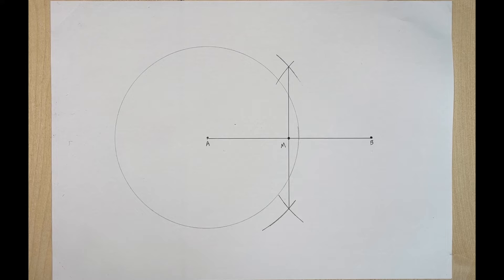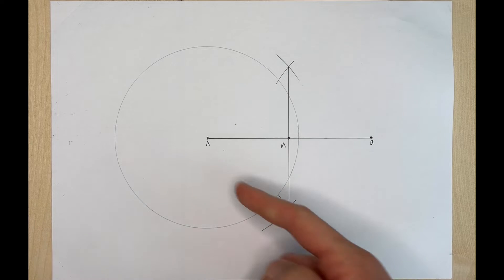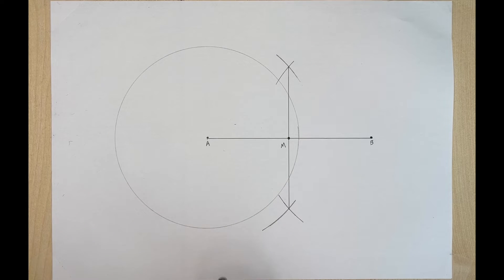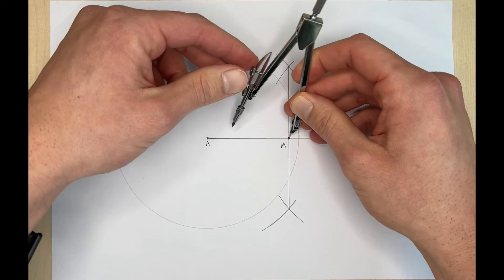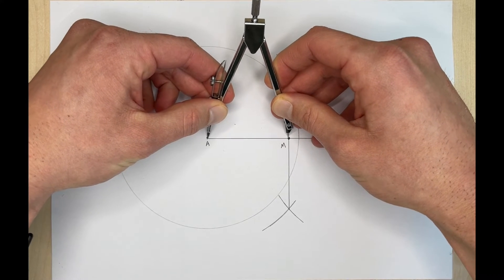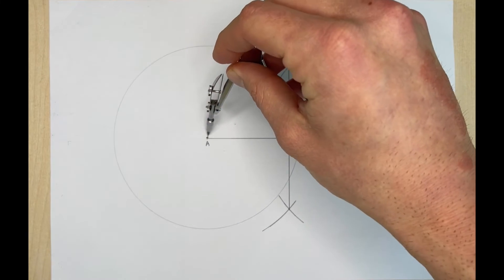Okay now the next step we're going to draw circle M that has midpoint M and radius B, or radius A. So we're going to close up our compass just a little bit and let's put the needle on M and we're going to open it until we reach point A and now we're going to draw this circle right here.